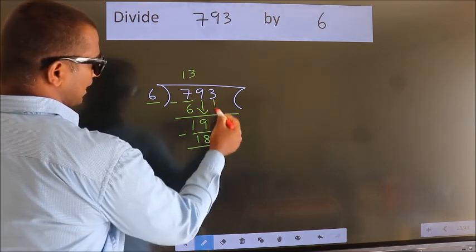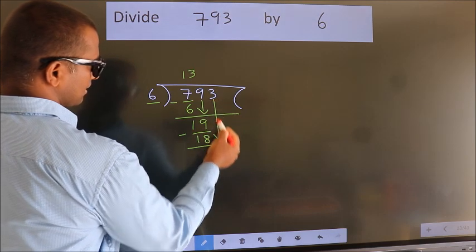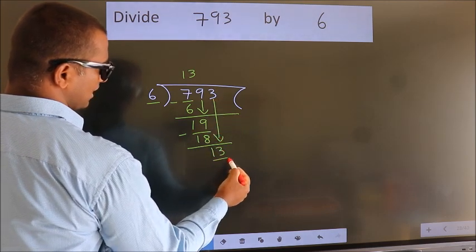After this, bring down the beside number. So, 3 down. So, 13.